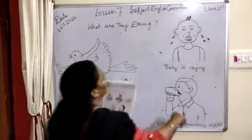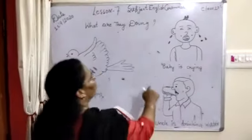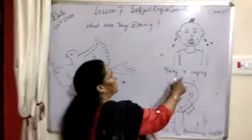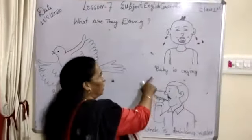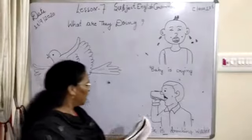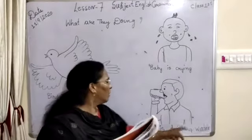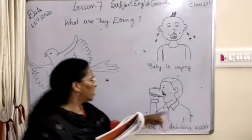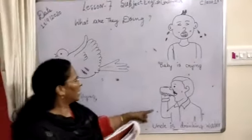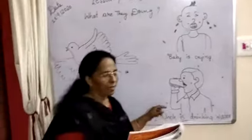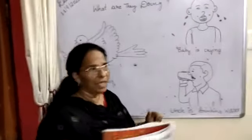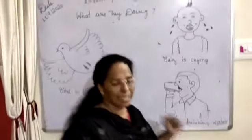In this picture, Baby is crying. Who is crying? Baby is crying. Another one: Angli is drinking water. Who is drinking water? Angli is drinking water. Every time someone is doing something.